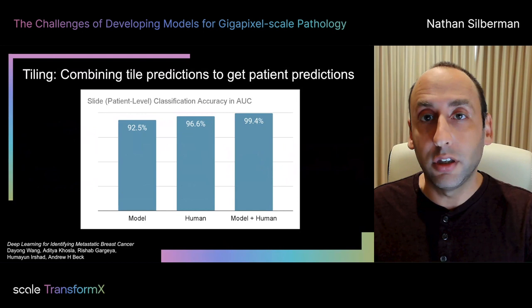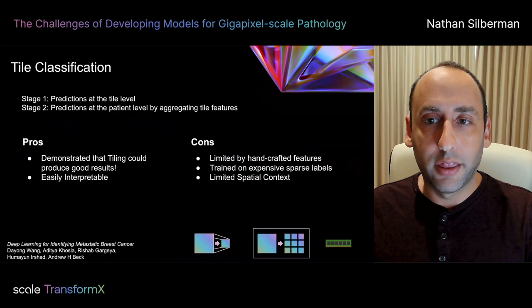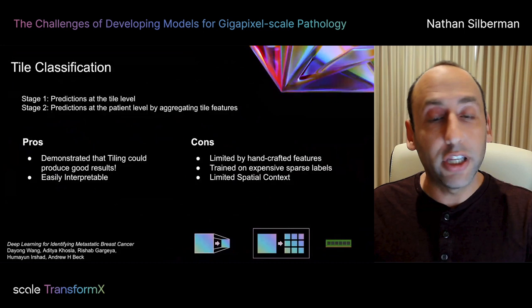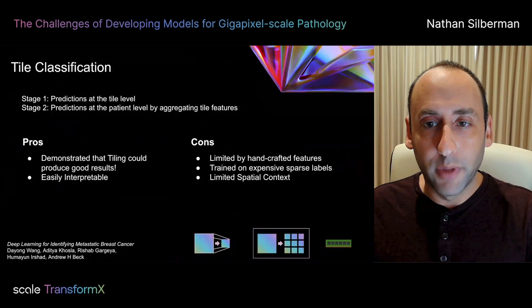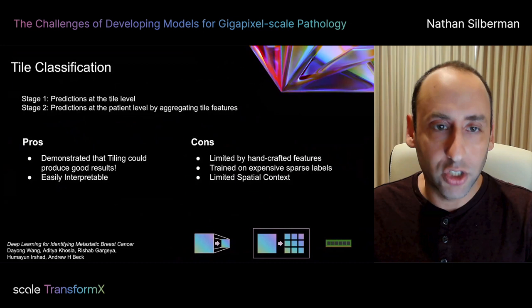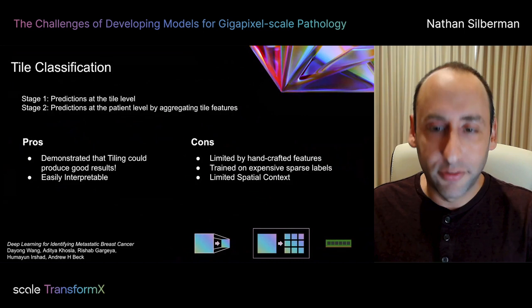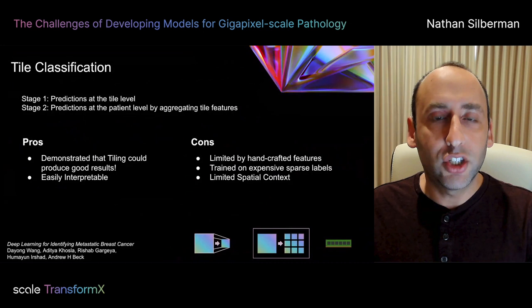To summarize, this work clearly demonstrated that machine learning models could be trained accurately on gigapixel-scale images by avoiding training on the entire image and instead doing this in two stages: firstly training on smaller tiles extracted from the image, and then combining those predictions of each tile in a manner that could produce a whole-slide or patient-level prediction. Some downsides: we're limited by our creativity about which handcrafted features we might devise. Additionally, we are required to label each tile that we want to use for training, which is an expensive and time-consuming process.